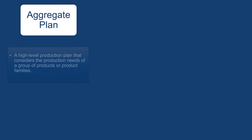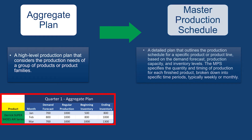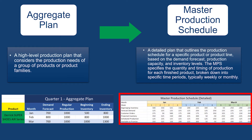The aggregate plan is just a combining of items into groups or families, all for planning purposes. That aggregate plan feeds into the master production schedule, and the master production schedule disaggregates the aggregate plan and makes it all make sense.